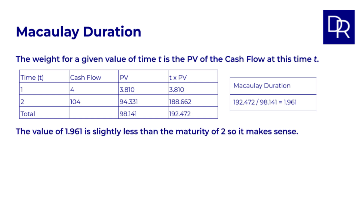Does this number make sense? Well, the value of 1.961 is slightly less than a maturity of 2, so that definitely makes sense. Most of the weight of the PV is at the maturity after 2 years, so the value for the duration should indeed be close to 2, but a bit less, because we do have a smaller earlier cash flow after 1 year. If you want to check any of this in more detail or try this for other bonds, have a look in the attached spreadsheet.